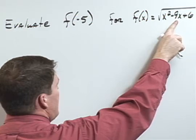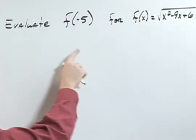Evaluate the function and round the answer to the nearest thousandth. f of x equals the square root of the quantity x squared minus 9x plus 6, and I want to evaluate f of negative 5.